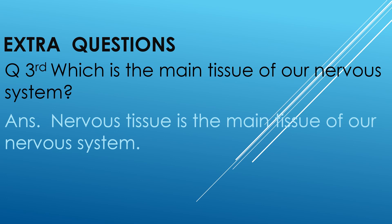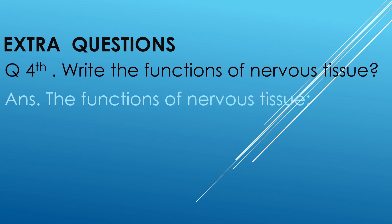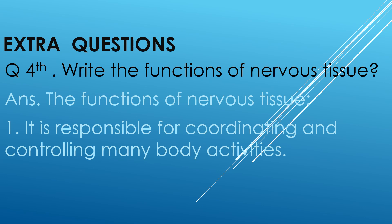Let's discuss question fourth. Write the functions of nervous tissue. The functions of nervous tissue are: it is responsible for coordinating and controlling many body activities. It plays a major role in emotions, memory and reasoning.